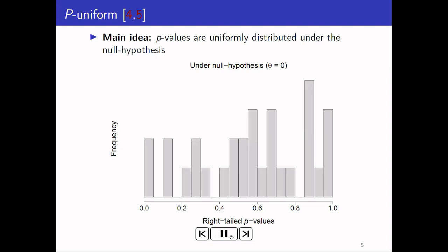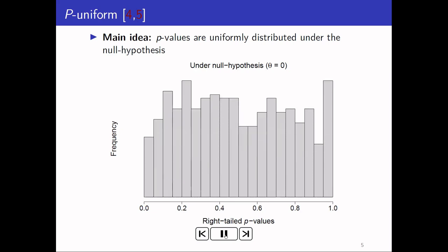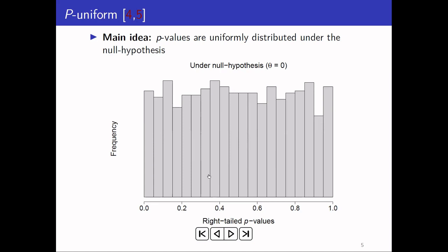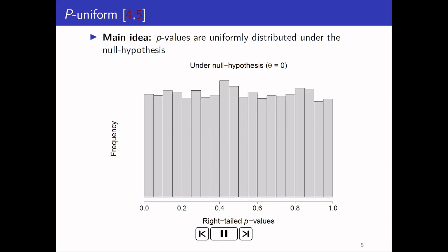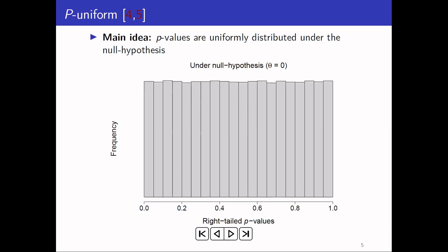Let's generate some studies. What you see is that the distribution of the generated p-values seems to follow a uniform distribution — not perfectly uniform at first, but the more studies are generated, the more the distribution looks like a uniform distribution. This property is used for the p-uniform method.